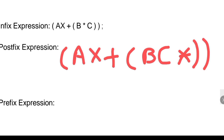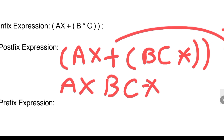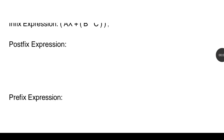In the next step, it will be A*X, and now B*C will come here, and the plus operator will go at the end. So it will be: A X B C * +. This is the postfix form of the given expression. Now we will see the prefix form of this expression.